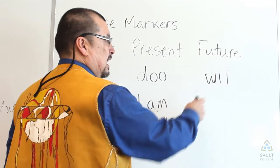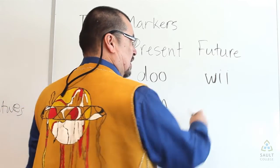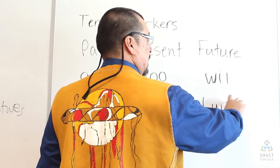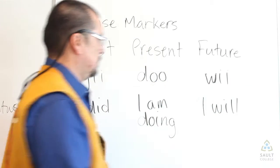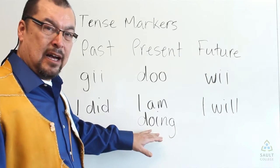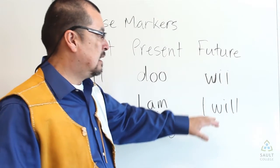And then wi is a simple, they call it the simple future, and wi means I will. Gi, I did. Doo, I am doing. Wi, I will.